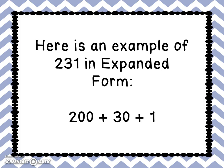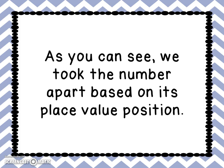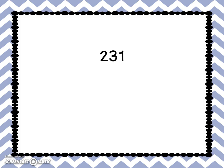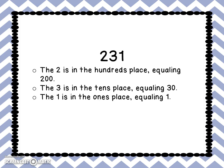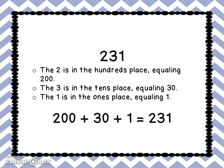Here is an example of 231 in expanded form: 200 plus 30 plus 1. We took the number apart based on its place value position. The 2 is in the hundreds place equaling 200. The 3 is in the tens place equaling 30. The 1 is in the ones place equaling 1. So 200 plus 30 plus 1 equals 231.